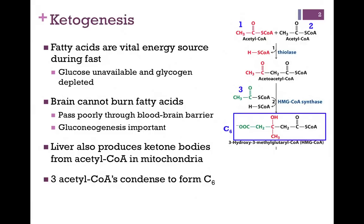Unfortunately, the brain cannot burn fatty acids. They pass poorly through the blood-brain barrier, and so it needs a source of glucose. In this case, gluconeogenesis by the liver is very important to supply the glucose that the brain needs.